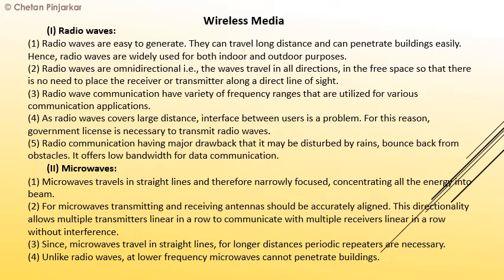Radio waves are omnidirectional — that is, the waves travel in all directions in free space — so there is no need to place the receiver or transmitter along a straight line. Because of this omnidirectional nature, the receiver and transmitter do not need to be kept in one line.